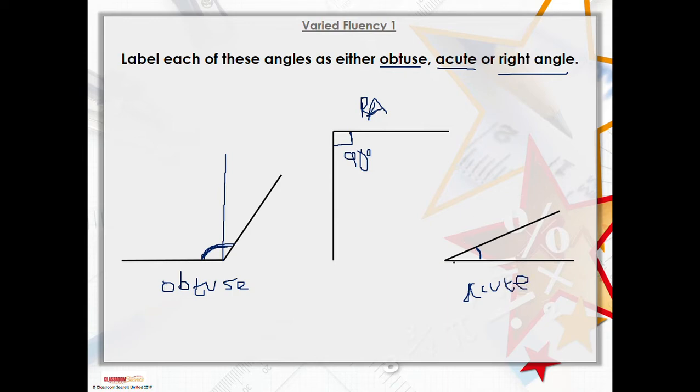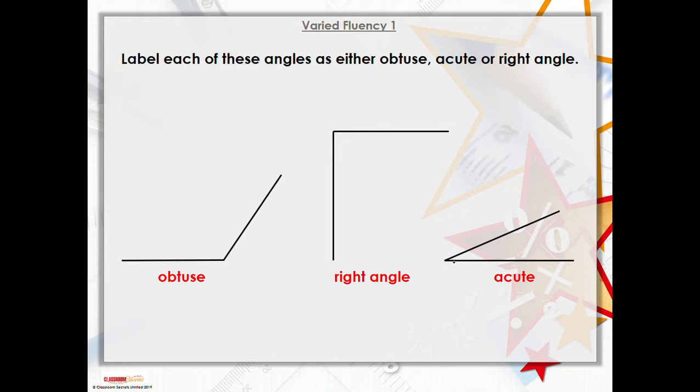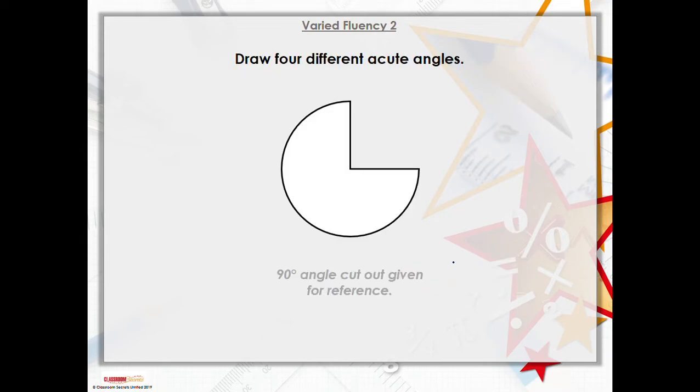Another question you might get is you need to draw four different acute angles. Remember, an acute angle is an angle that is smaller than 90 degrees. In the middle here it's got a 90 degree angle cut out for reference - this is 90 degrees, so you need to draw angles that are going to be less than 90 degrees.